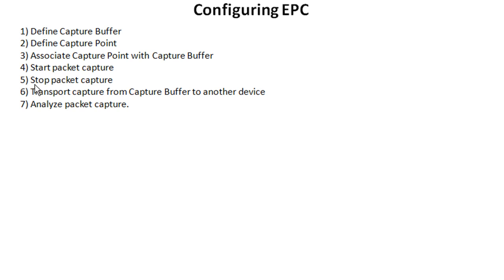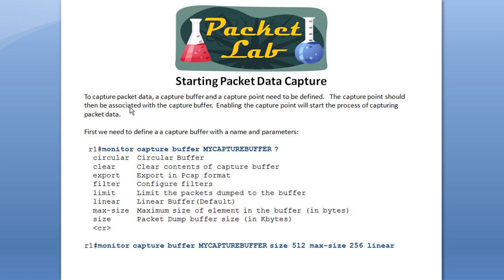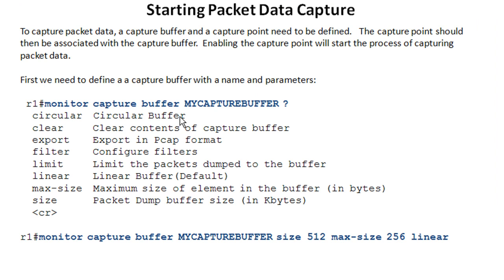For our example, we're going to use a single capture point and single capture buffer and associate those together. Then you're going to start the packet capture and eventually stop it. Step six is kind of optional but you're going to use it 99% of the time — that is to transfer the packet capture from the capture buffer to another device using a protocol like TFTP. You can also look at the captured packets with a dump from the buffer in ASCII, but I don't think you want to do that. To capture packet data, the capture buffer and capture point need to be defined first, using the monitor capture buffer command.